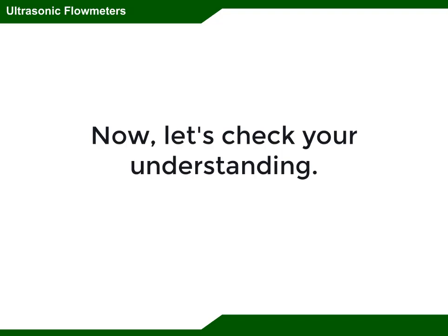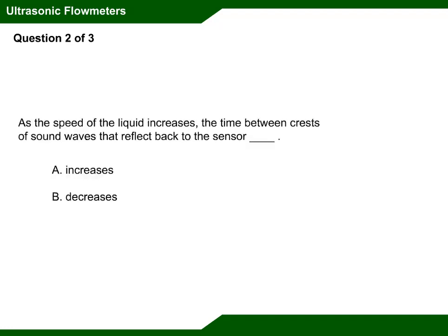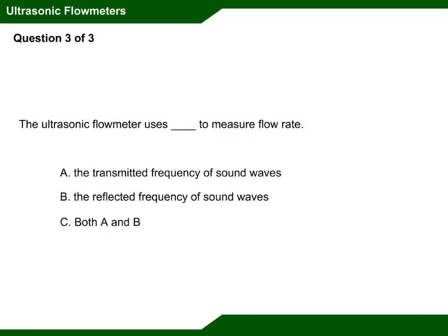Now let's check your understanding. Ultrasonic sensors are used to measure the flow rate of dirty liquids. As the speed of the liquid increases, the time between crests of sound waves that reflect back to the sensor decreases. The ultrasonic flow meter uses both the transmitted frequency of sound waves and the reflected frequency of sound waves to measure the flow rate.